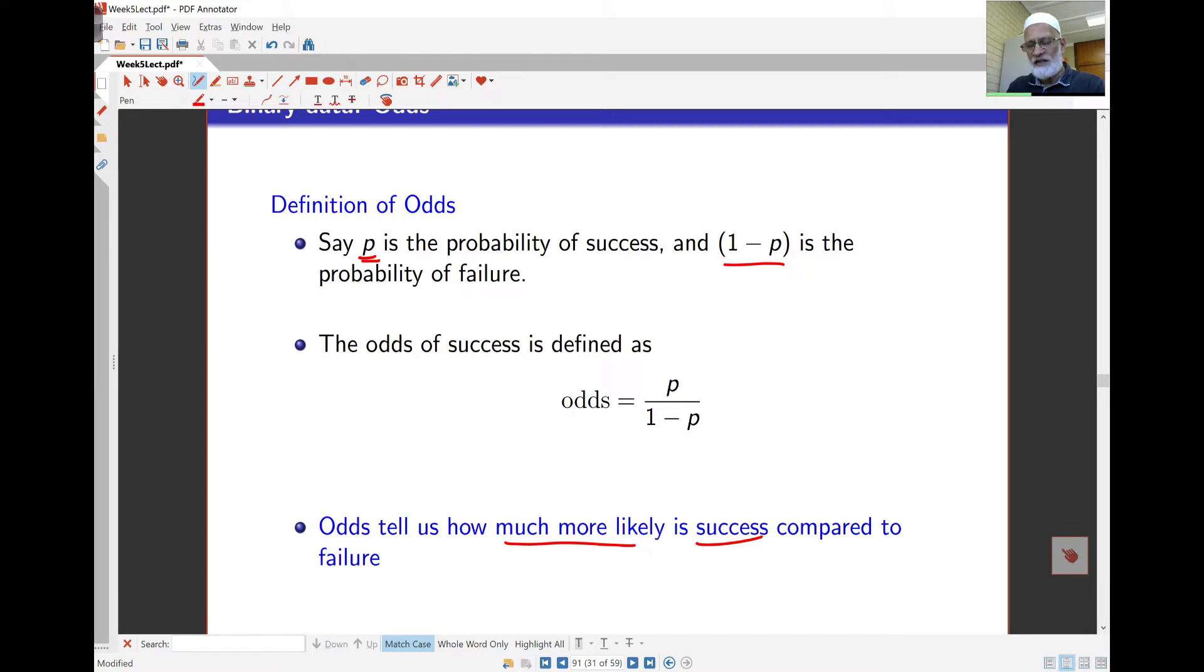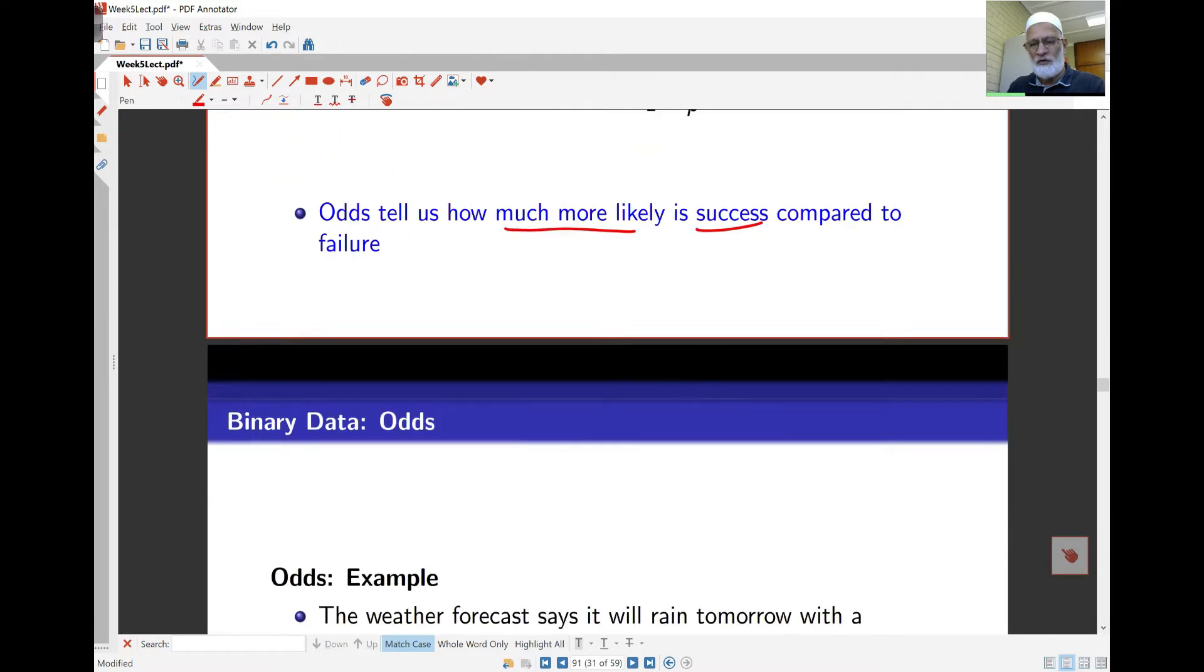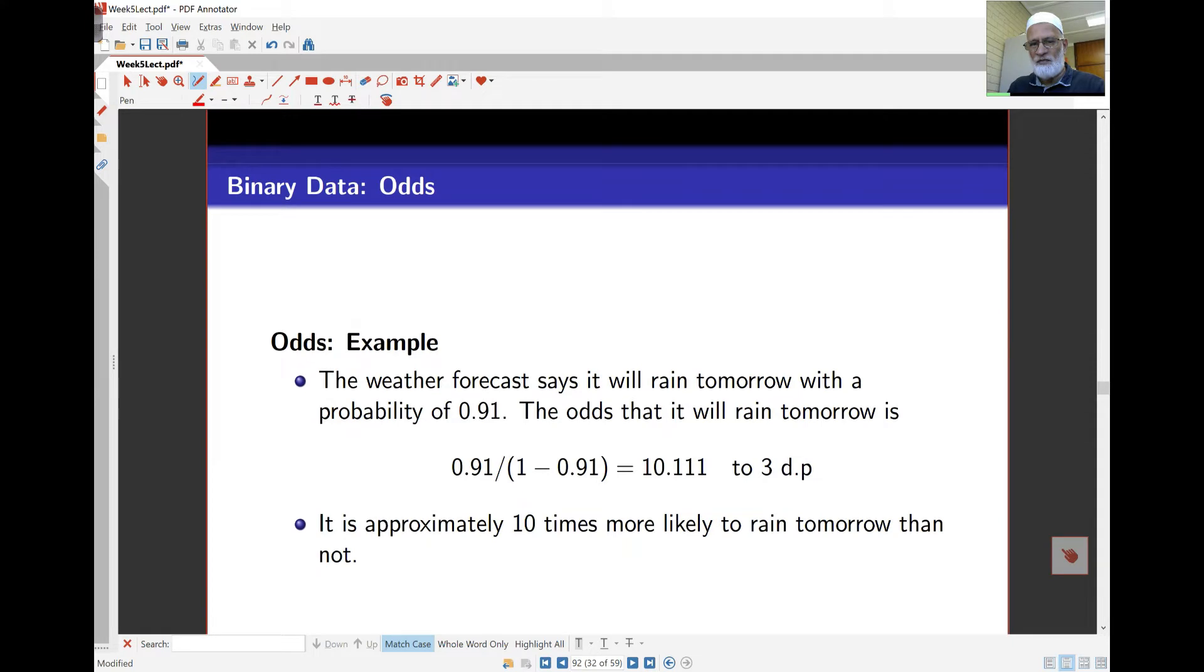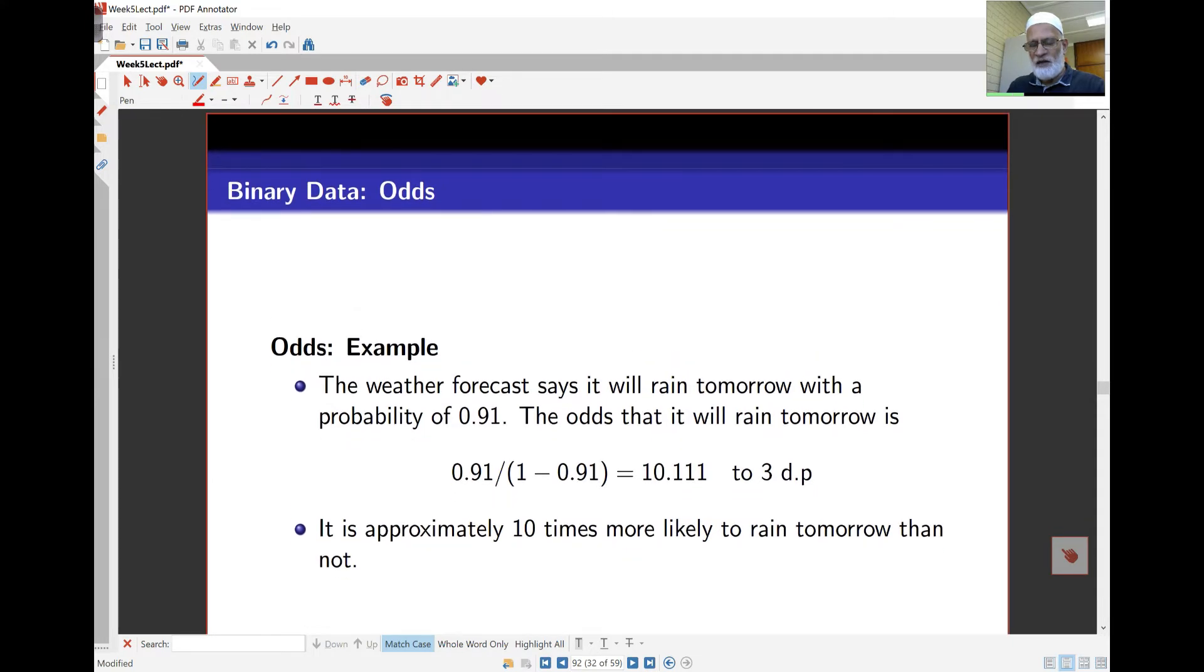There are various advantages of this we'll see as we go along. The first thing is some examples here for calculations. If the weather forecast says it will rain tomorrow with probability of 0.91, then the odds that it will rain tomorrow is going to be 0.91 over 1 minus 0.91, which is 10.11. In other words, it's 10 times more likely to rain than not rain.